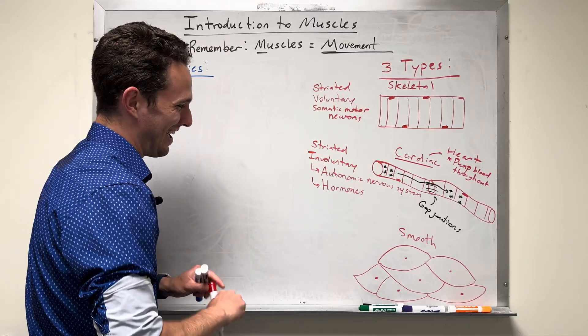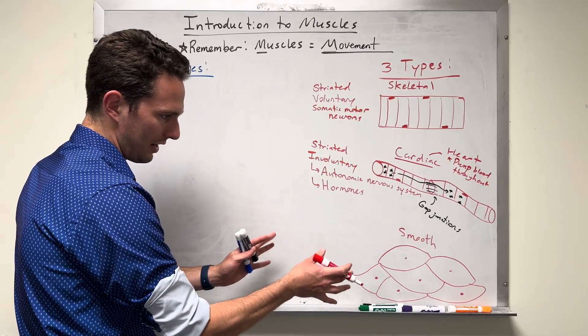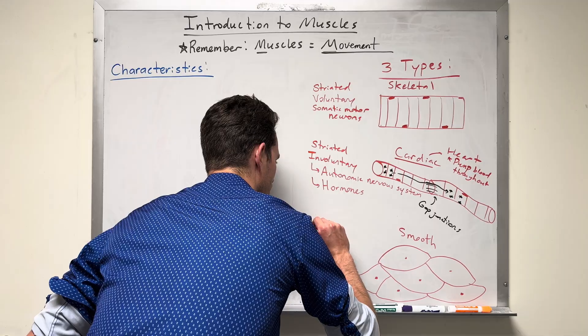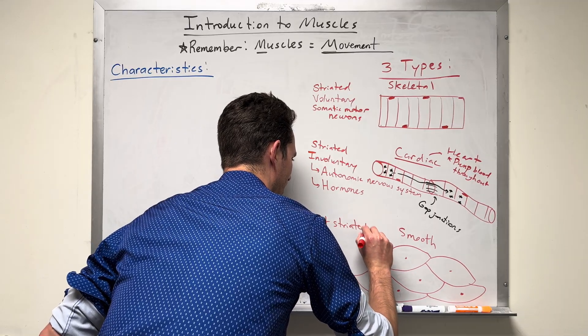Lastly, we have smooth muscle tissue. Smooth muscle tissue you see looks a lot different. This is not striated, so we see it's not striated.